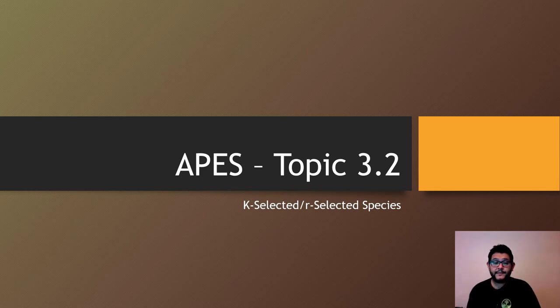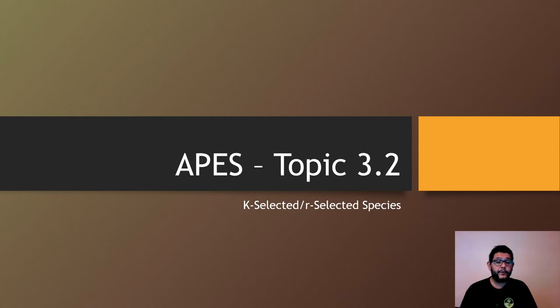Hey guys, this is Mr. V and this is episode 2 of APES unit 3.2. This one is going to be about R-selected and K-selected species.